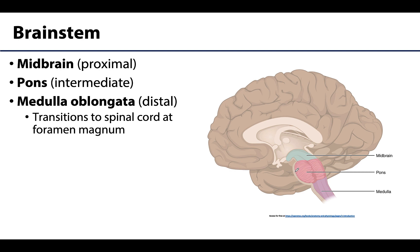Moving to the brainstem, which is composed of the proximal midbrain, the intermediate pons, and the distal medulla oblongata — often shortened to the medulla. It is the medulla that is continuous with the spinal cord at the foramen magnum of the occipital bone. So at the foramen magnum, from that point on this would be spinal cord. We will discuss the brainstem structures in more detail when we discuss the origin of the cranial nerves, as most originate from this region.